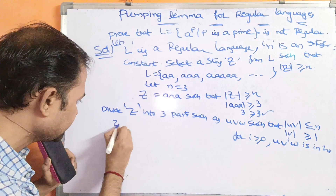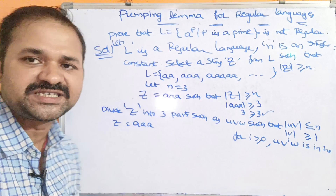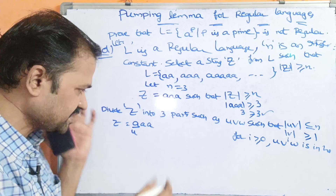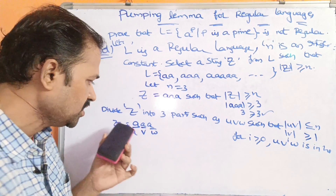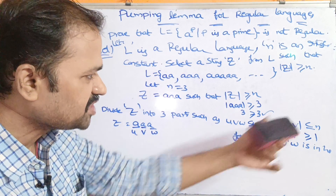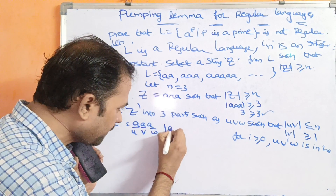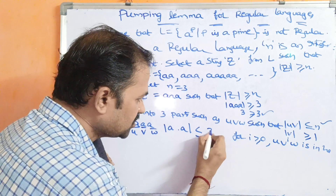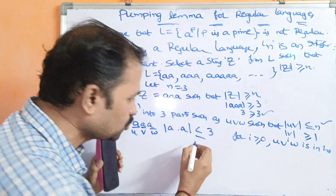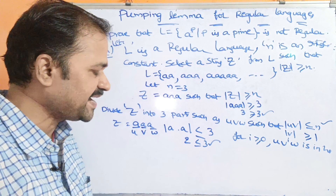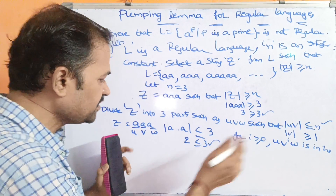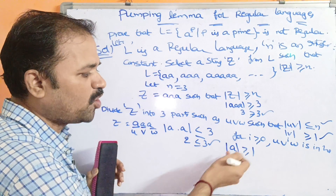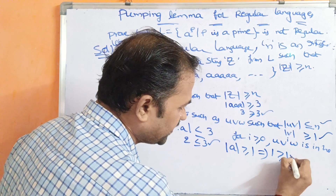We assumed Z as 3 As, so we divide 3 As into three parts. Let U equal A, V equal A, W equal A — it is our choice, but we need to satisfy the two conditions. Mod UV: U is A, V is A, so mod AA equals 2, and 2 is less than or equal to 3 — condition true. Mod V: mod A equals 1, and 1 is greater than or equal to 1 — condition true. Both conditions are satisfied.